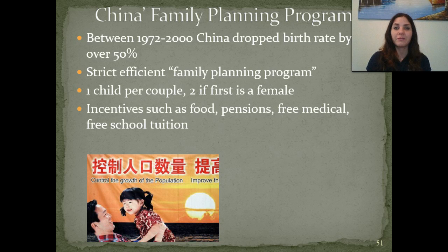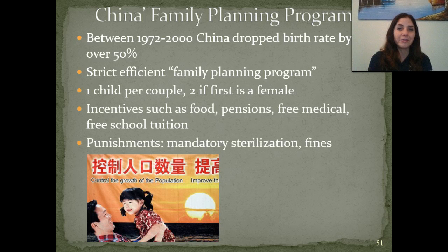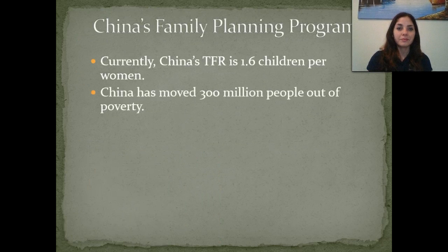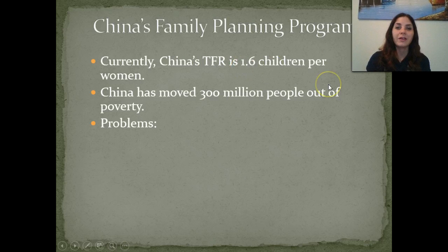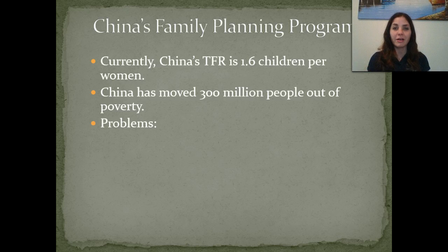China gave big incentives to families that followed the family planning program, such as food, pensions, and guarantees of free medical care and school tuition for their child. They also had severe punishments — if someone had more than one child, they could undergo mandatory sterilization, face fines, or actually lose their jobs. Currently, China's total fertility rate (TFR) is about 1.6 children per woman, less than two per couple, meaning population should be decreasing. China has moved over 300 million people out of poverty because of this program.